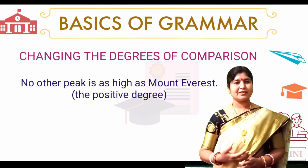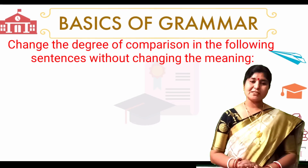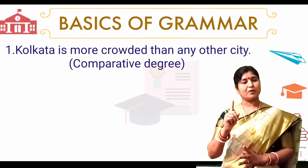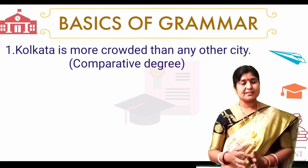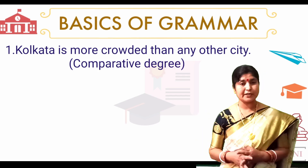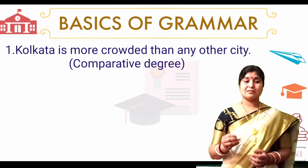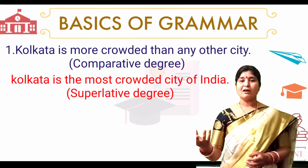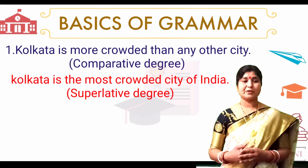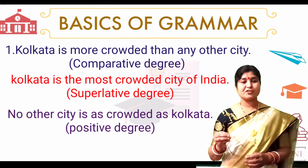Now we solve some exercises: change the degrees of comparison without changing the meaning. Question one: 'Kolkata is more crowded than any other city' — this is comparative degree. In superlative degree: 'Kolkata is the most crowded city of India.' In positive degree: 'No other city is as crowded as Kolkata.'